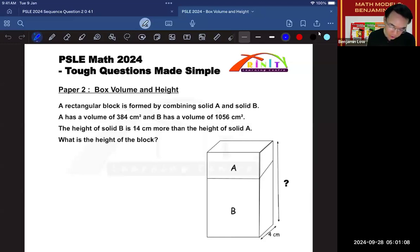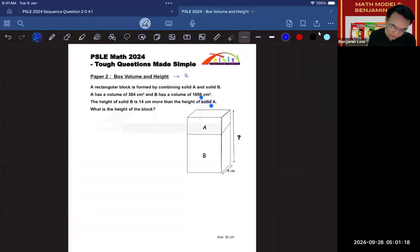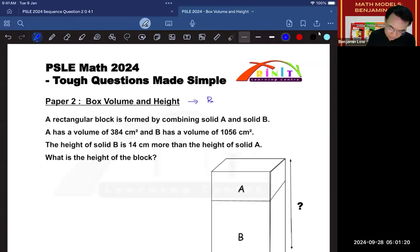I understand that it is also called the block question, so whatever we call it doesn't really matter. Now the very first thing that you want to do is underline all your keywords. Remember to do that. So first you've got to underline that it is made up of solid A and solid B. That's why we form the block.